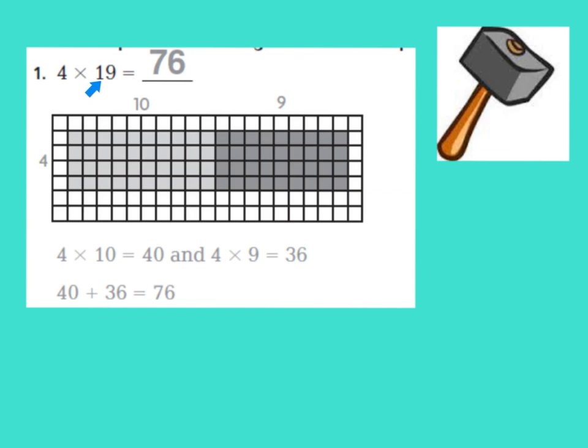Now, 19 can be a harder number to multiply by. So what they did was they used the distributive property, which is also referred to as the break-apart method.